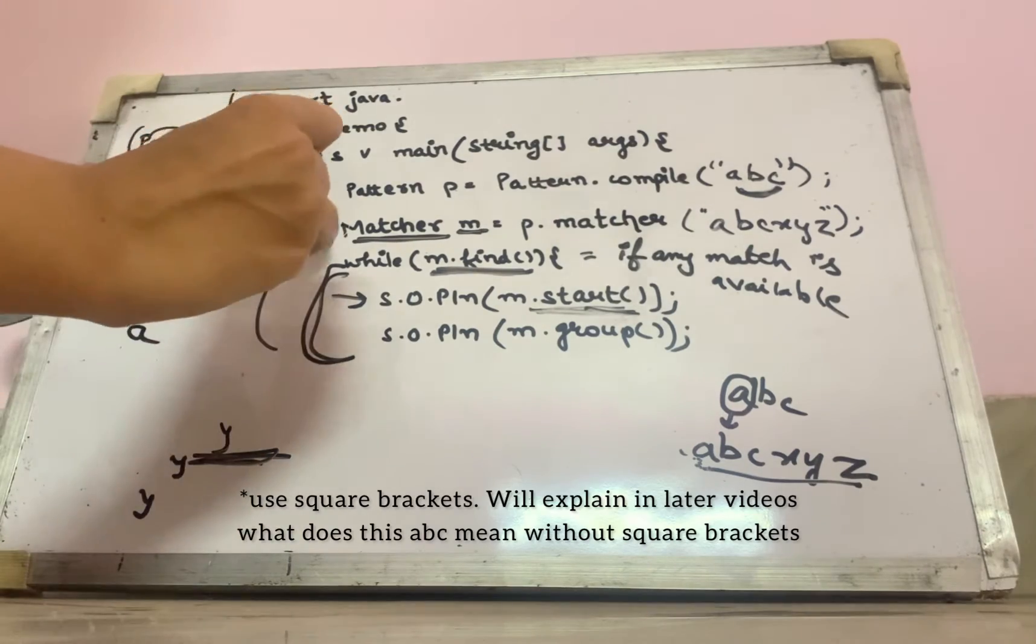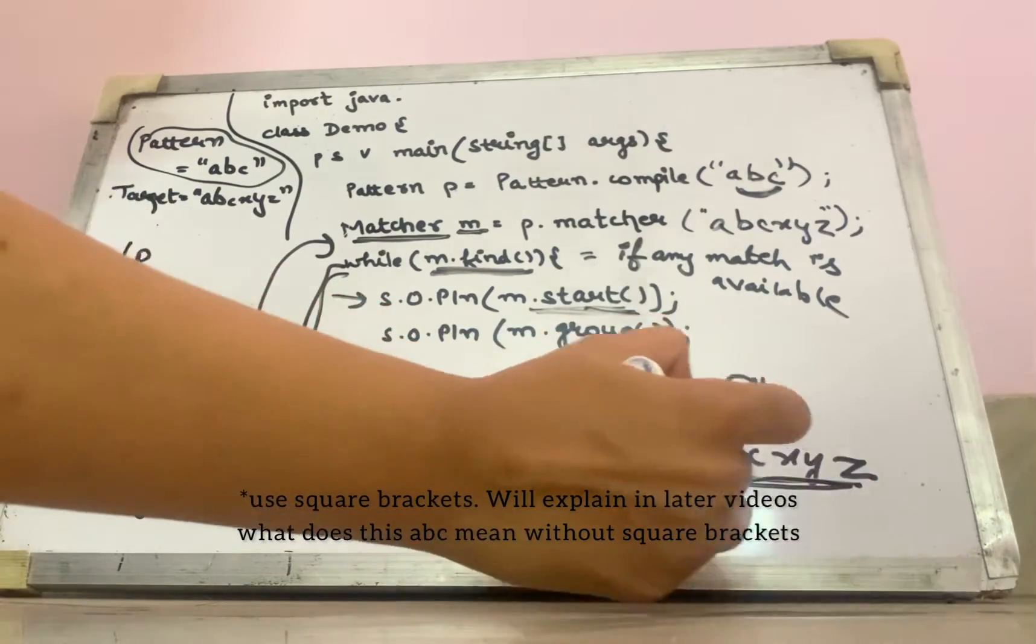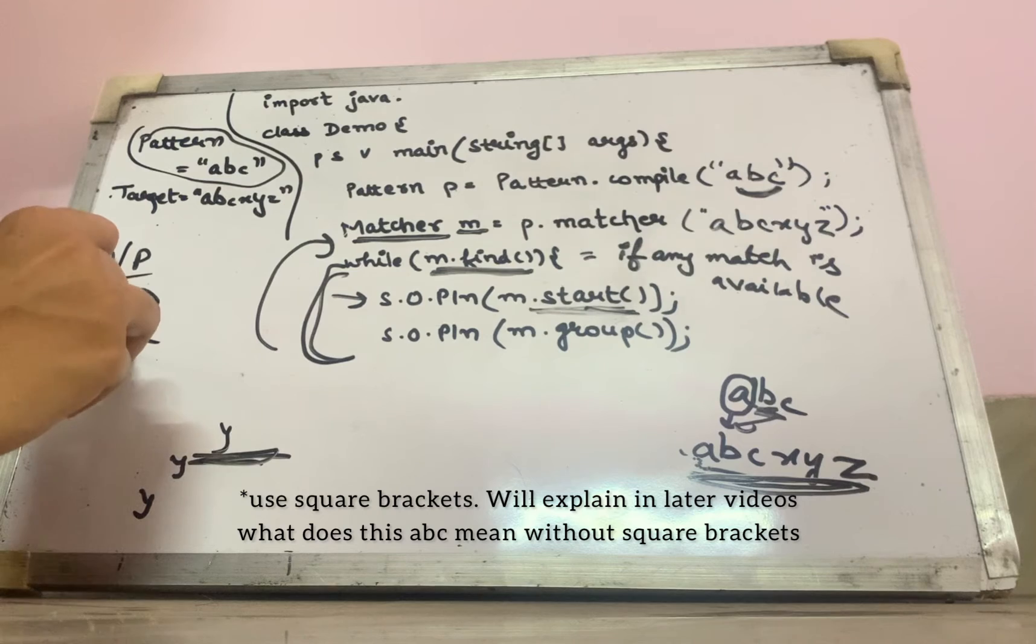Again, it will go to this while. It will pick b. It will check if b is found in this match. It will say yes. So it is going to print at index 1. What match is found? B.